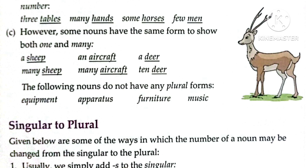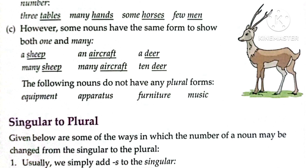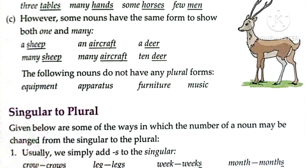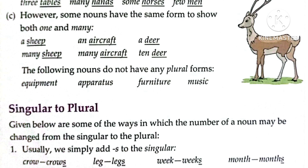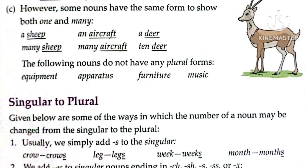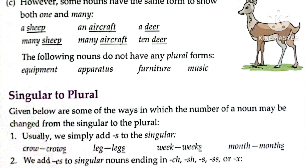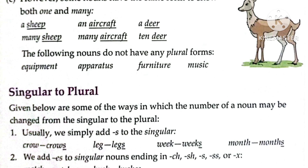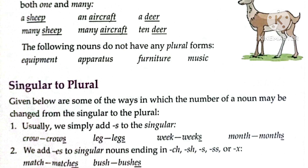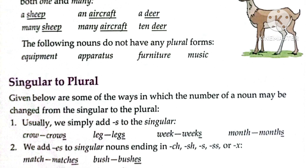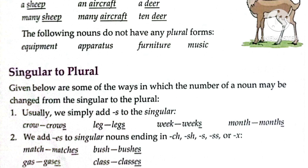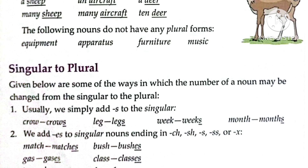However, some nouns have the same form to show both one and many. For example: a sheep / many sheep, an aircraft / many aircraft, a deer / ten deer. We do not add S or ES for these nouns.